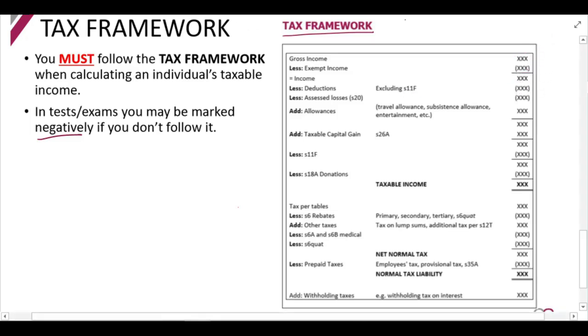But what I want you to do is if there are one, two, three transactions that they give you in a question, I want you to, for each of them, think about what is the gross income implication and do it. What's the exempt income implication and do it. What is the deductions implication and do it.